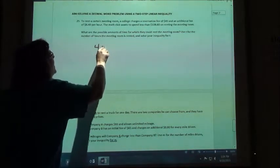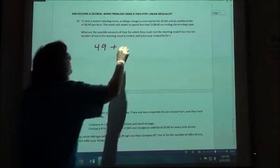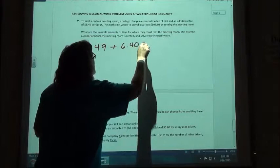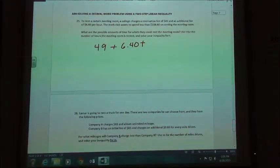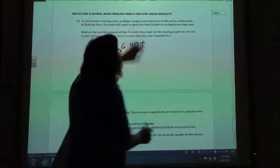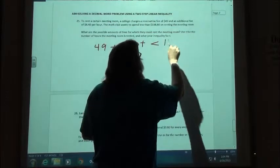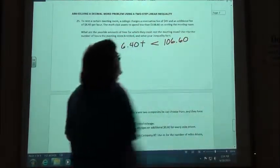So we charge $49 and an additional $6.40 per hour. We're using T for the time, so $6.40T. The math club wants to spend less, so a less than sign, $106.60.